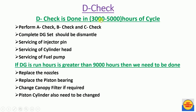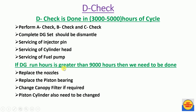D check is done after 3000 to 5000 running hours. In D check, repeat A check, B check, and C check. Additionally, the complete DG is dismantled: servicing of the injector pin, cylinder head, and fuel pump is carried out. If DG run hours exceed 9000 hours, replace the fuel injector nozzles, replace piston bearings, change the canopy filter if required, and replace the piston and cylinder. The DG is then completely reassembled.